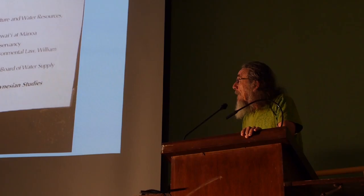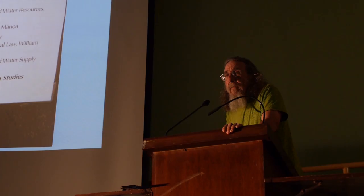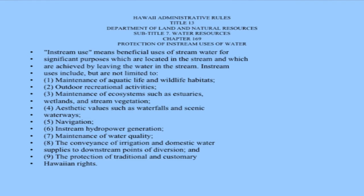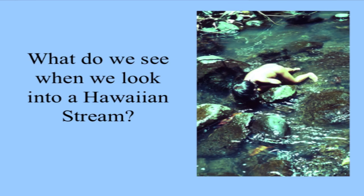If you look at water law in Hawaii, it's very specific. This is the part of state law that set up the water commission and also says what fresh water is to be used for. Stream use means beneficial uses for various purposes, and you can see that aquatic life and wildlife habitats is very high up on the list. So one of the reasons to conserve water or to keep water in streams — by law — is for the stream biota. Maybe they shouldn't have skipped it on that poster.